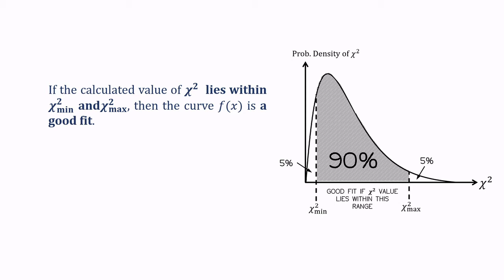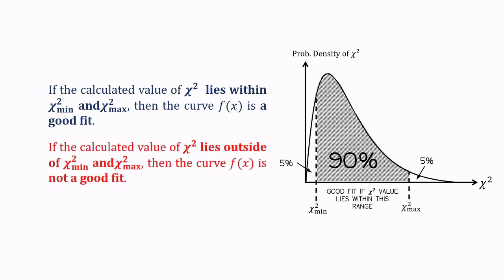On the other hand, if the calculated chi squared lies outside of the chi squared min and the chi squared max, then the curve is not a good fit.